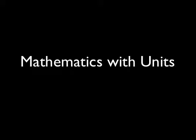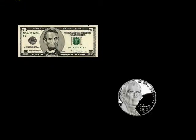So before we do that, let's look at what units are. So we have two objects, a $5 bill and a nickel.